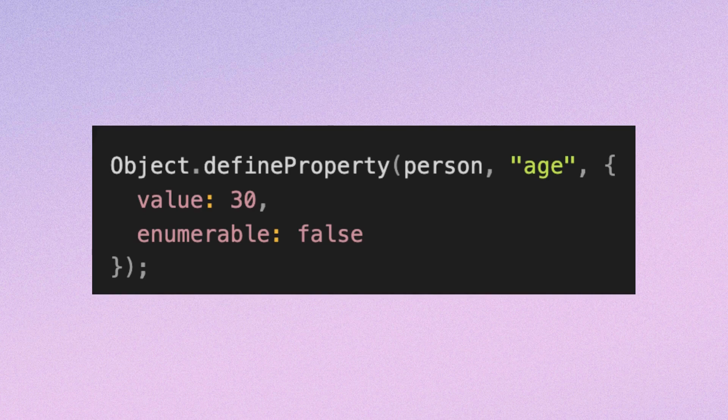You might be wondering about enumerable properties and how to work with them. That's a separate topic and we won't go into detail about it here. Instead, here is a brief example of how to work with enumerable properties.